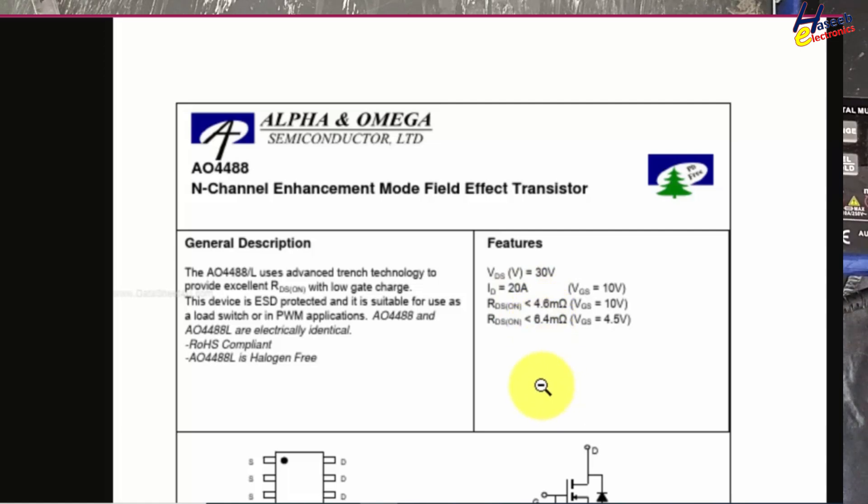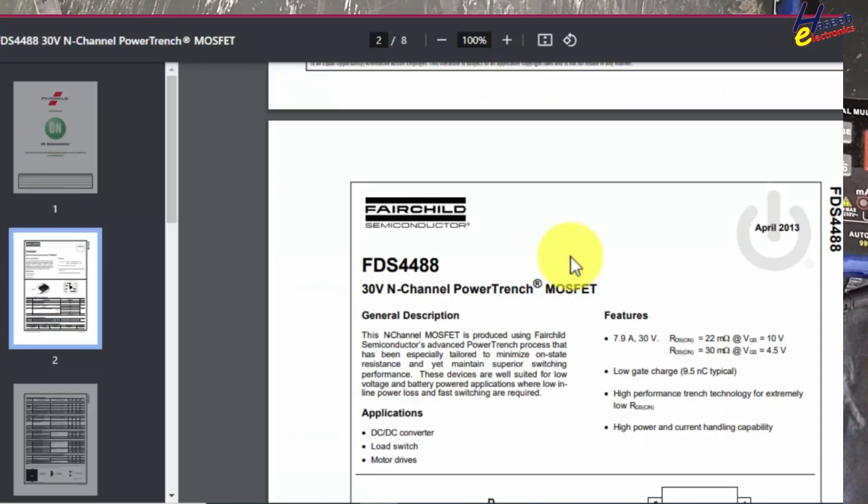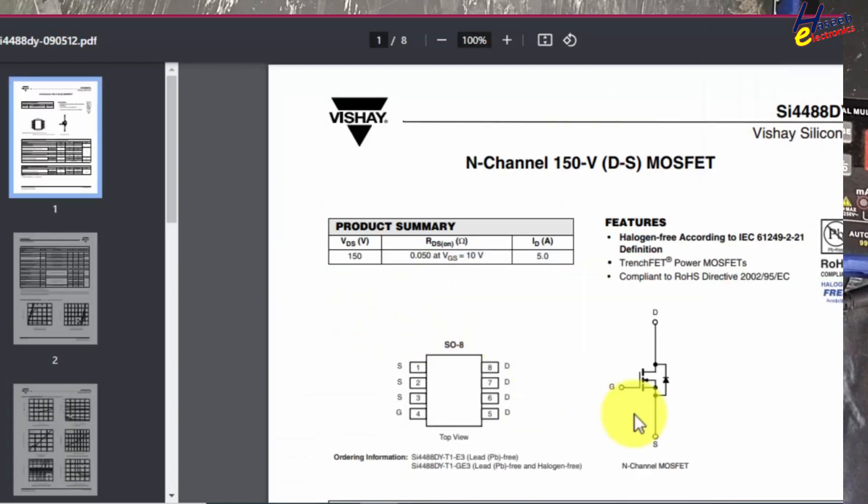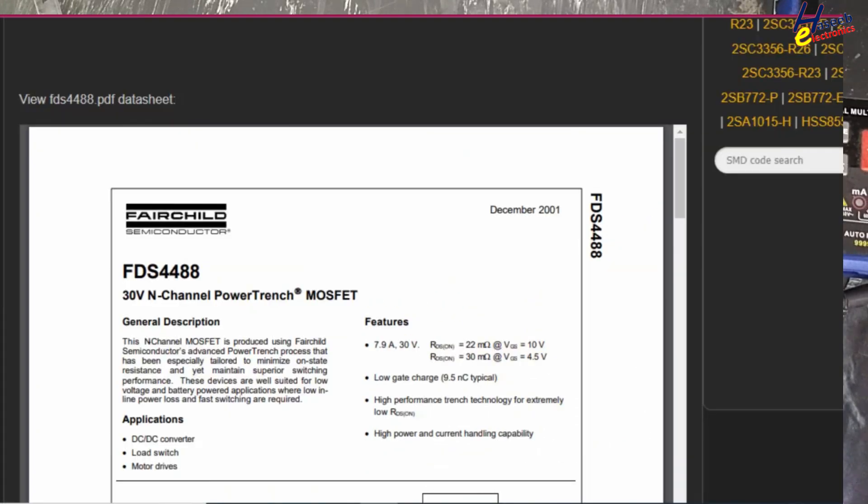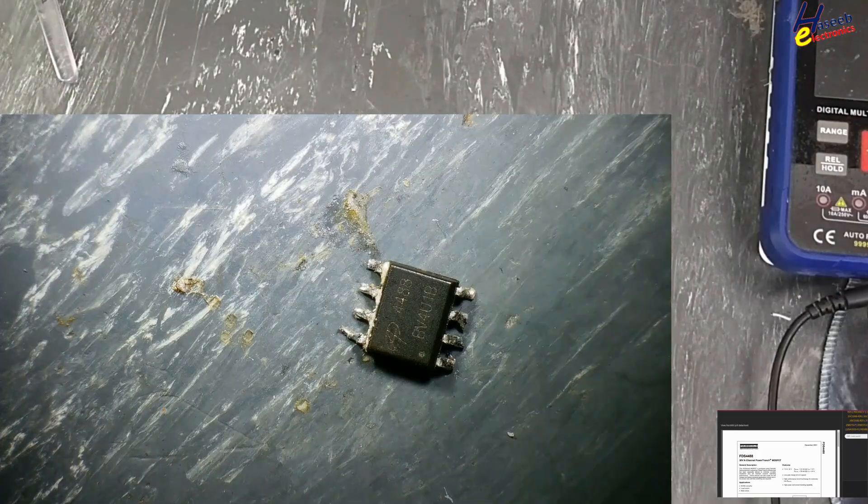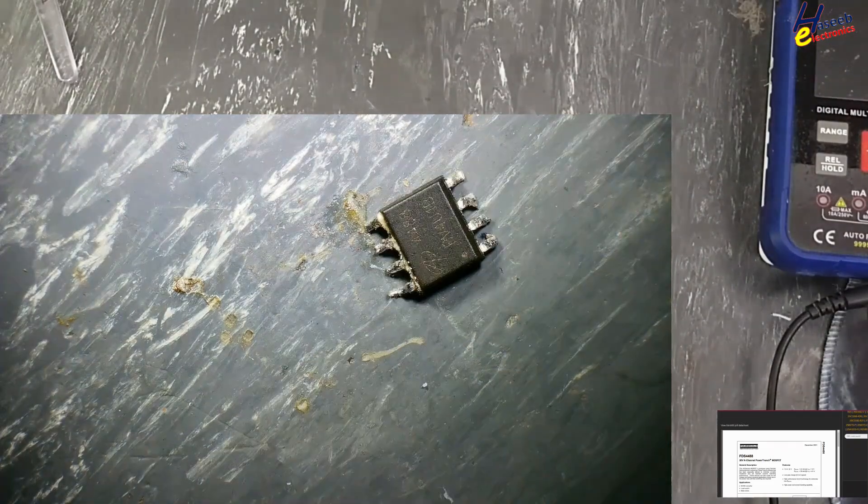FDS double four double eight, 30 volt N-channel power trench MOSFET. Drain current 20 amperes. SI double four double eight, but SI double four double eight is 150 volt. In our case, it is 30 volt MOSFET. Let's check it. When we are testing MOSFET, we must hold it on PCB. We can solder it or we can use double face tape.